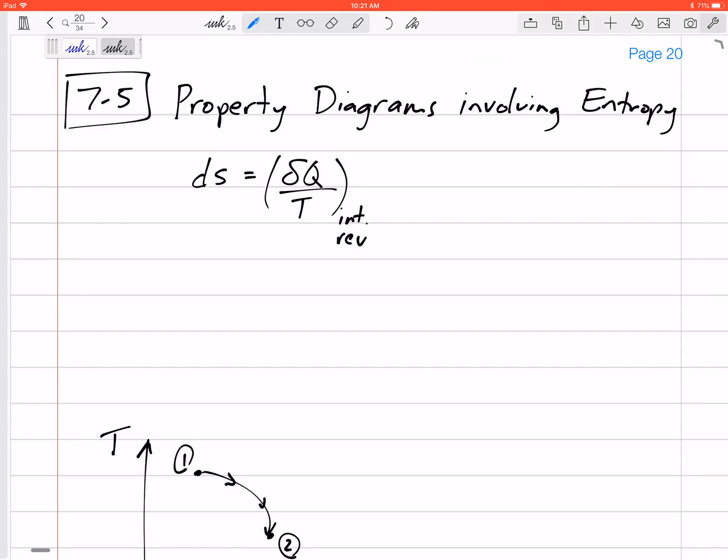So we know that the definition for entropy, DS is delta Q over T of an internally reversible process. Let's do a little bit of rearranging. I'm going to multiply this T on the other side.